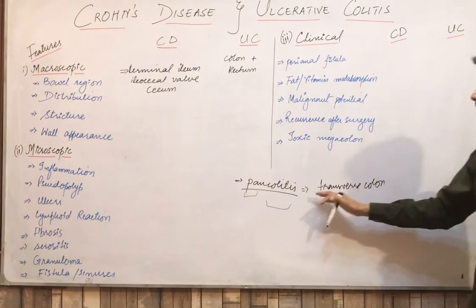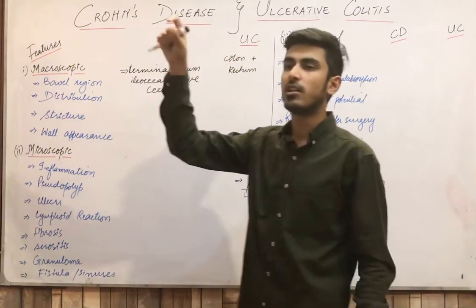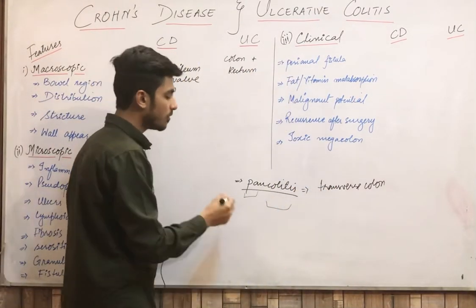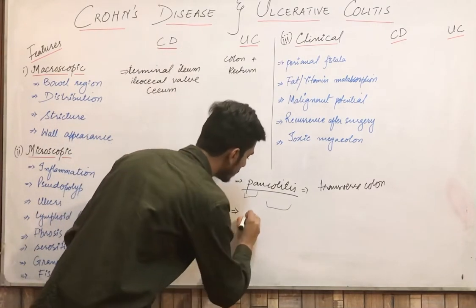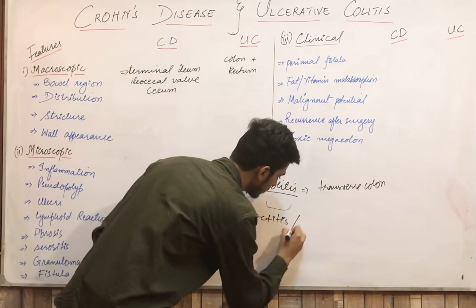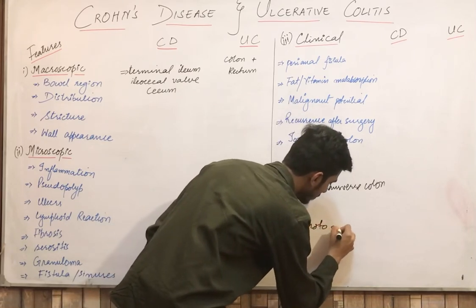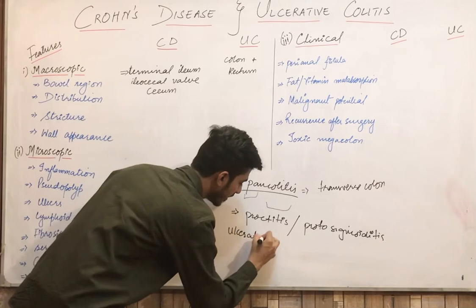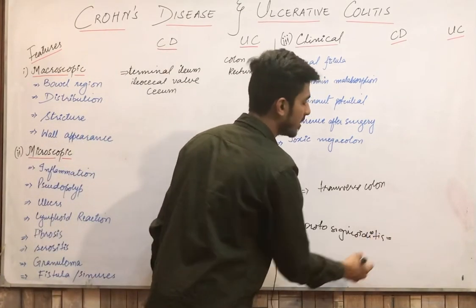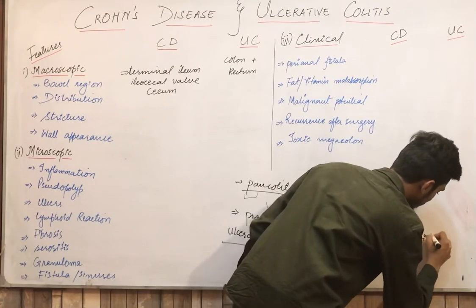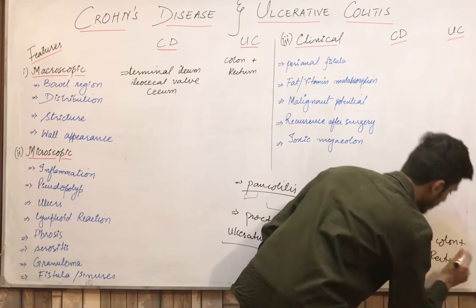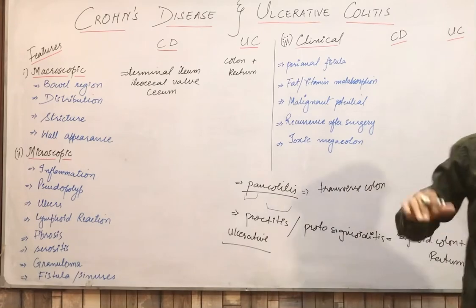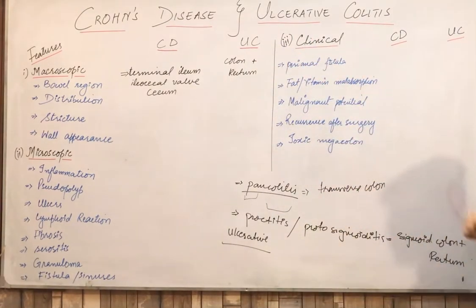So pancolitis means, according to the words, the whole colon is involved, but practically it is seen that it does not extend beyond the transverse colon — meaning it involves the descending and transverse colon but goes no further. The second terminology is proctitis or proctosigmoiditis — when the sigmoid colon plus rectum is involved in ulcerative colitis, it is called ulcerative proctitis or proctosigmoiditis.